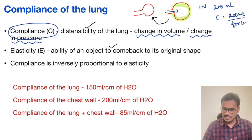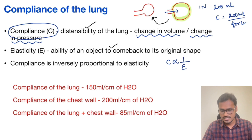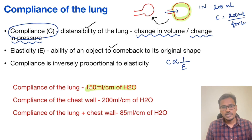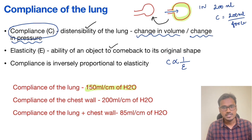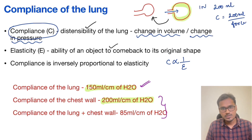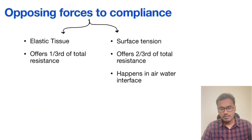Compliance is inversely related to elasticity. Now for values: compliance of the lung, which is frequently asked in MCQs, is 150 ml per centimeter of water, meaning the lung expands 150 ml per centimeter change in water pressure. Compliance of the chest wall is more compliant at 200 ml per centimeter of water. The combined lung and chest wall compliance is around 85 ml per centimeter of water. These are potential MCQ topics.